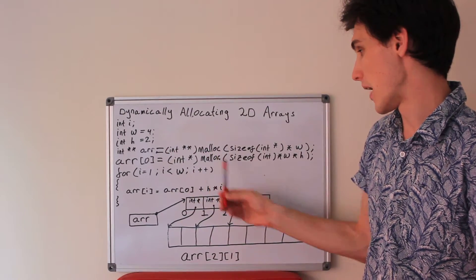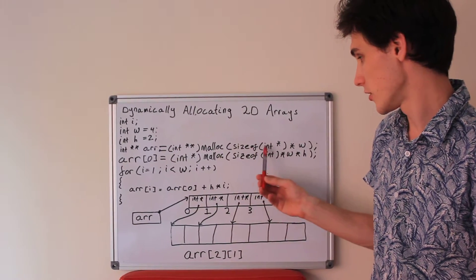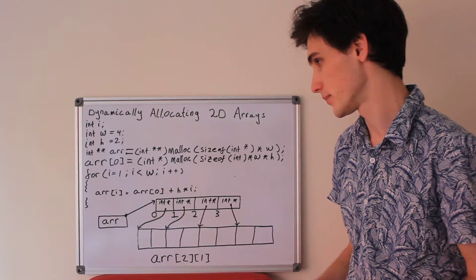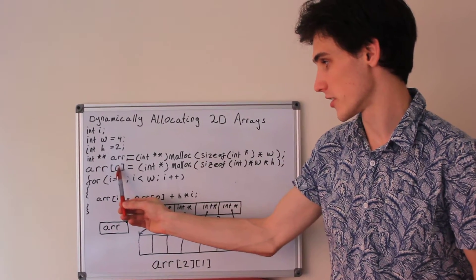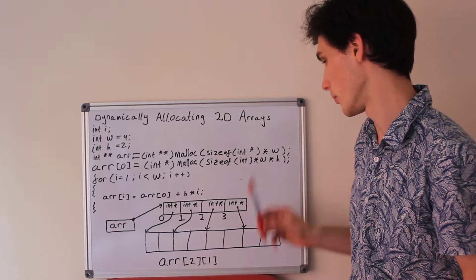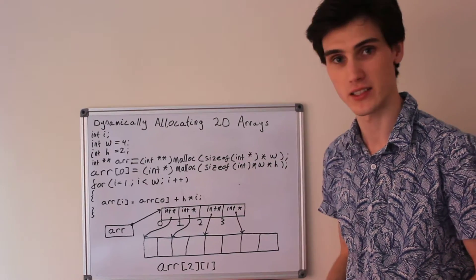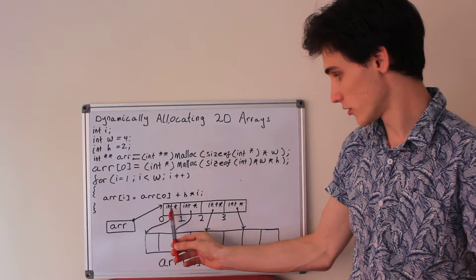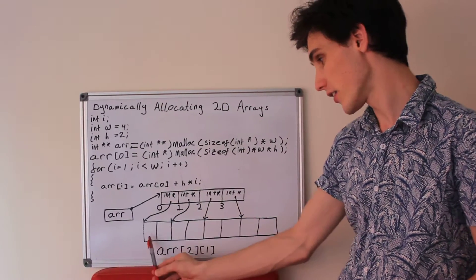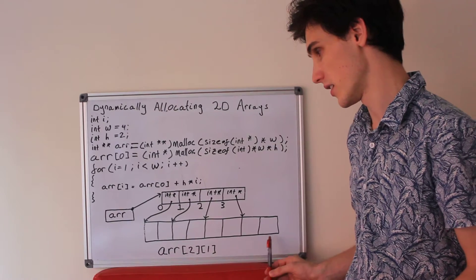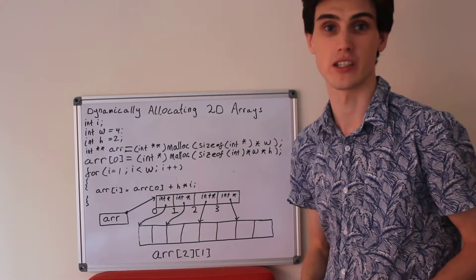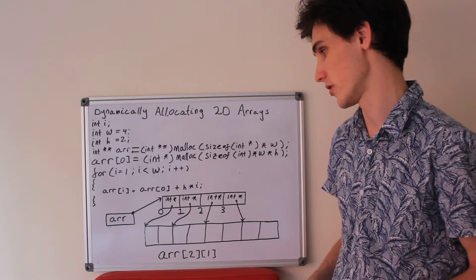We're going to set r equal to a malloc of the size of an int star multiplied by the width of our two-dimensional array. The first element of this array we're going to malloc to the size of an int multiplied by the width multiplied by the height. So we've allocated two arrays: one is an array of 4 int stars, and the other is an array of 8 ints — 8 being the width times the height, which is the total number of elements.